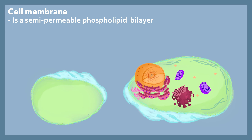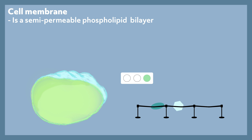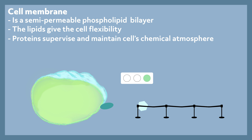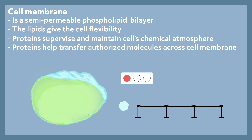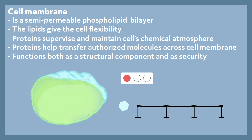Cell membrane. In our last video, I mentioned that the cell membrane works to separate the intracellular from the extracellular, but it does a lot more than that. The cell membrane is a semipermeable phospholipid bilayer — semipermeable means that some things can pass and others can't, so the cell membrane is kind of like security at an airport. The lipids give the cell flexibility, while the proteins supervise and maintain the cell's chemical atmosphere and help transfer authorized molecules across the membrane. So, the cell membrane functions both as a structural and as a protective component.